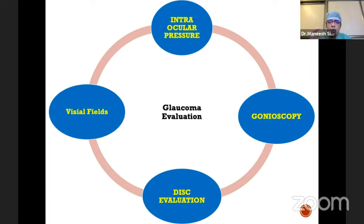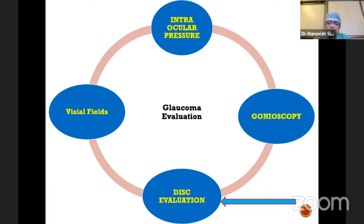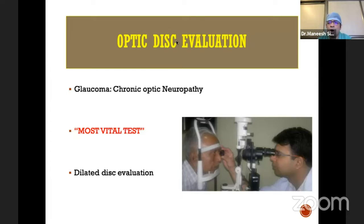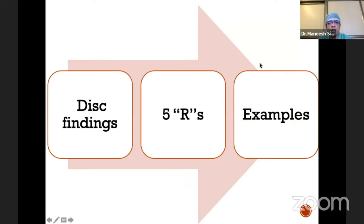In a glaucoma evaluation there are certain key points. Intraocular pressure is extremely vital for treatment. Gonioscopy is extremely vital because you need to classify patients as open angle or closed angle and understand the etiology of glaucoma. Visual fields are important for assessing the grade and rate of progression of glaucoma. But I personally believe that disc evaluation is the most important evaluation in glaucoma, because glaucoma is a disease of the optic nerve and how well you evaluate your optic nerve determines how good a glaucoma expert you are. Disc evaluation is the X factor in glaucoma evaluation.